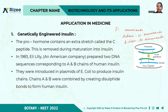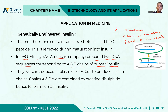In 1983, Eli Lilly, an American company, prepared two DNA sequences corresponding to the A and B chains of human insulin. These two DNA sequences were introduced into the plasmids of E. coli to produce insulin chain A and chain B.